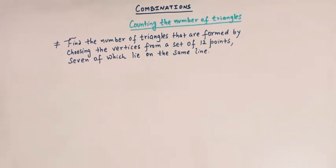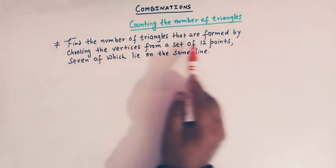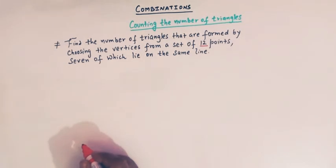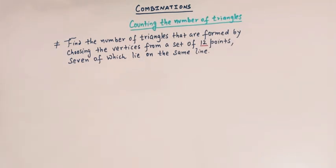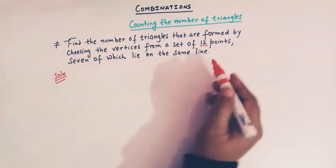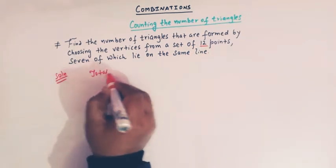Hello viewers, in today's class we are going to solve yet another important problem from the concept of combinations. We are going to take up one problem related to counting the number of triangles when a certain condition is given. The problem is to find the number of triangles formed by choosing vertices from a set of 12 points, 7 of which lie on the same line.